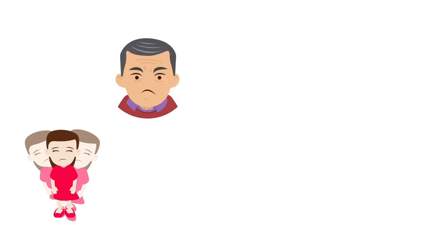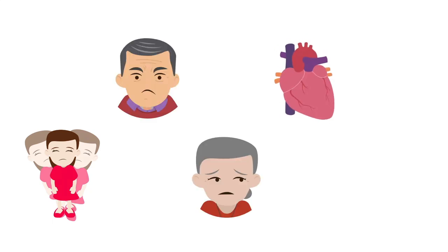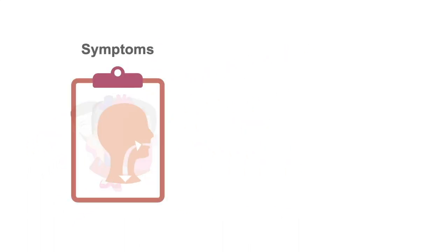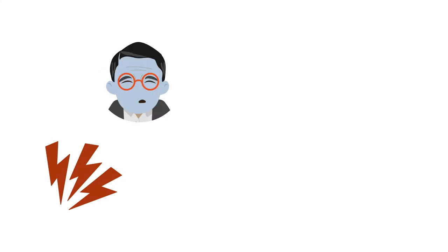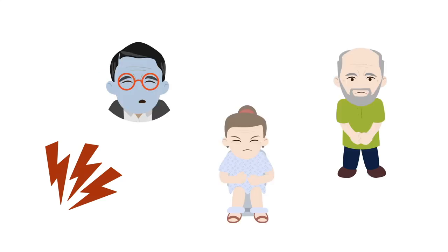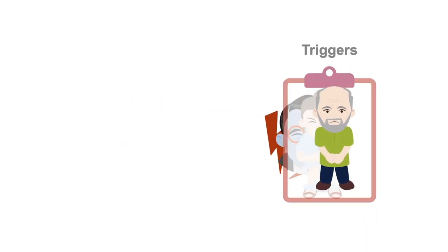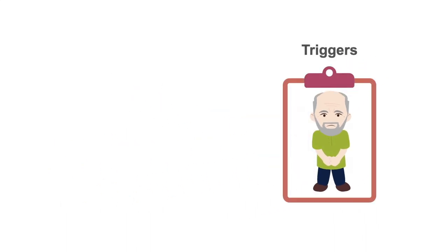Non-purposeful movements, grimacing, look of fear, and increased heart and respiratory rate can suggest uncontrolled symptoms. Pain, dyspnea, constipation, and urinary retention are common and treatable triggers for agitated delirium.